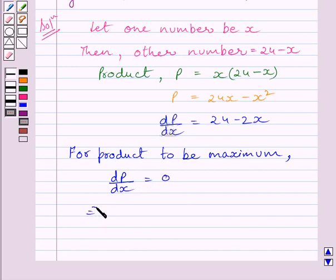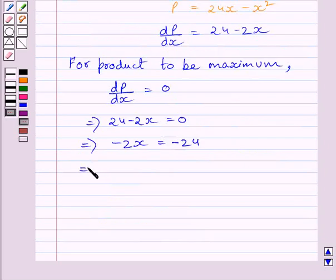We get 24 - 2x = 0. We know dp/dx = 24 - 2x, so subtracting 24 from both sides, we get -2x = -24. Dividing both sides by -2, we get x = 12.